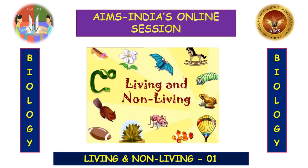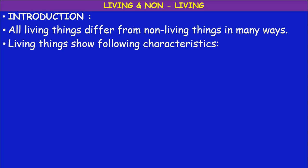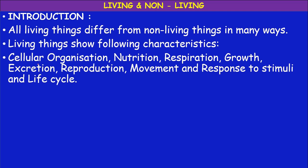Let us go to part one of the lesson: living and non-living things. All living things differ from non-living things in many ways. Let us see some of the important characteristic features which make them differ — cellular organization, nutrition, respiration, growth, excretion, reproduction, movement and response to stimuli, and a life cycle. These characteristics are found in living things. Some of these can be found in certain non-living things, but not all.